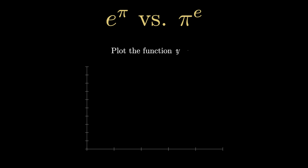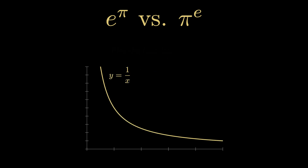Start by plotting the function y equals 1 over x, which is a decreasing function that looks like this. Now, plot the point x equals e and draw a line to the graph, and note that pi is greater than e, so we can draw this line to the graph.